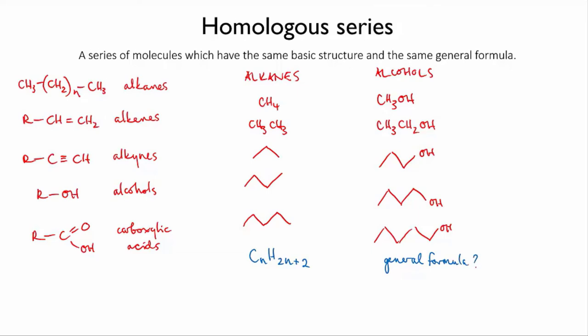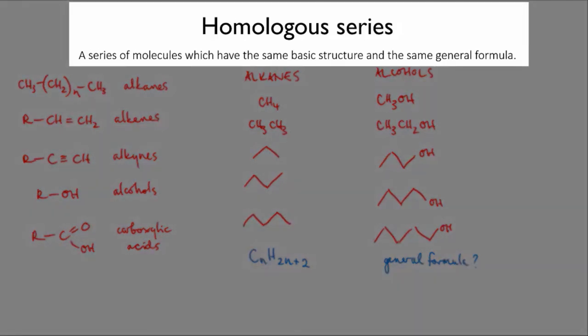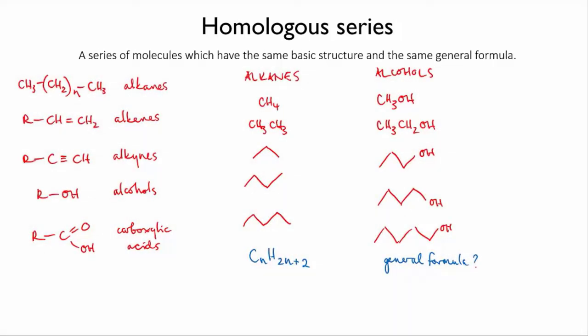Each of these series of molecules is known as a homologous series. So the alkanes are a homologous series. But if you were to mix up the alkanes and the cycloalkanes, for instance, they would not be a homologous series since they have different general formulae and a different basic structure.